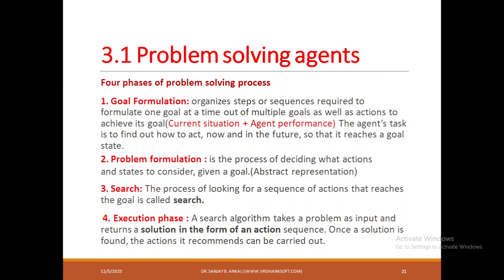Whenever problem-solving agents try to solve a problem, they try to solve it in a systematic way by applying four different phases. The first phase is goal formulation. In goal formulation, the agent will try to understand how to act now and how to act in future to reach a goal state. It will try to find out what are the organized sequences of states and actions that can be executed over a period of time so that we can reach a goal state.